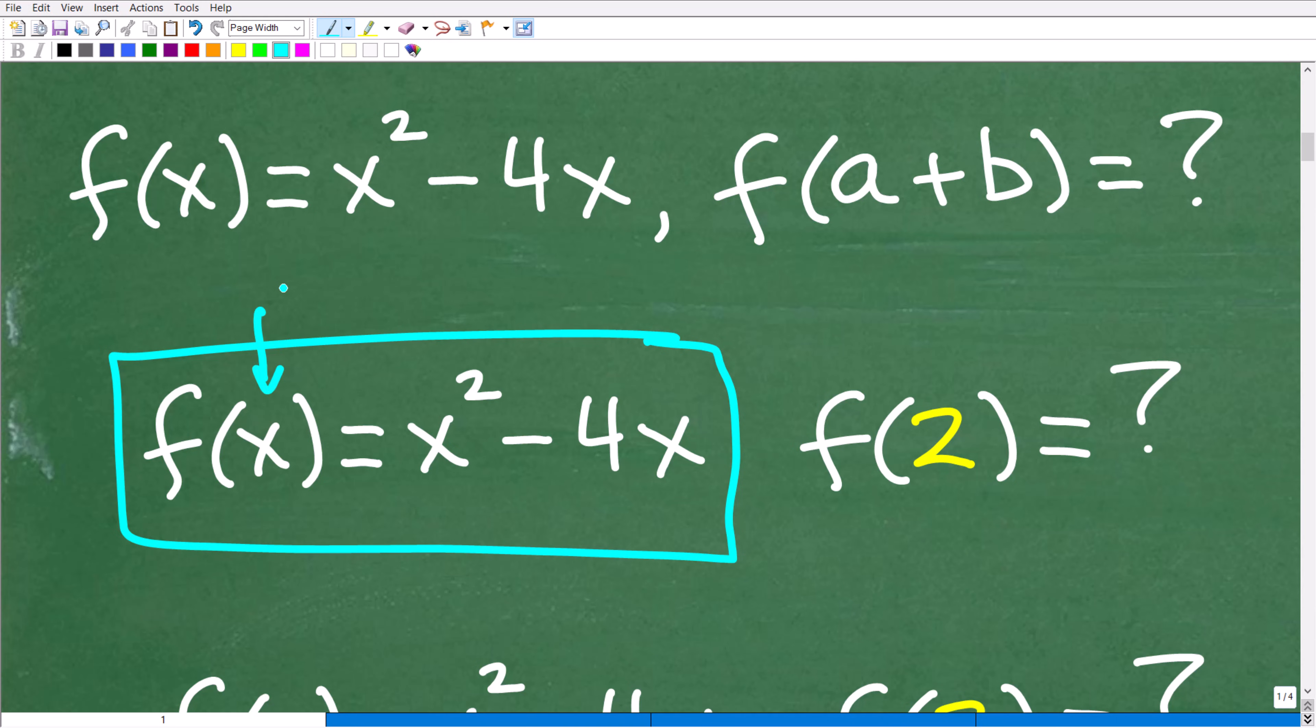We have an input value. We're going to put something in and then we have this rule that we're going to take this input value, do something to it, and then get some output value. Now we don't have to get all technical right now and talk about the domain and range. This is important but not for this particular video. So we'll keep it nice and basic for those who are a little bit shaky on functions.